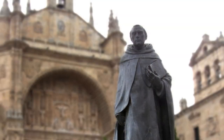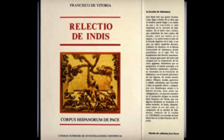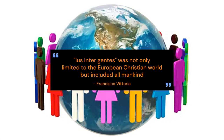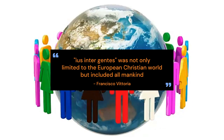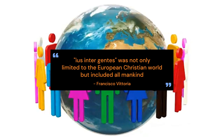Previously, Francisco Vitoria, a Dominican monk of Spanish nationality, in his book entitled Relectio de Indis, addressed the relationship between Spain and Portugal with the Indians in America. In his writings it was stated that states could not act as they pleased; according to him, Ius Inter Gentes was not only limited to the European Christian world but included all mankind.